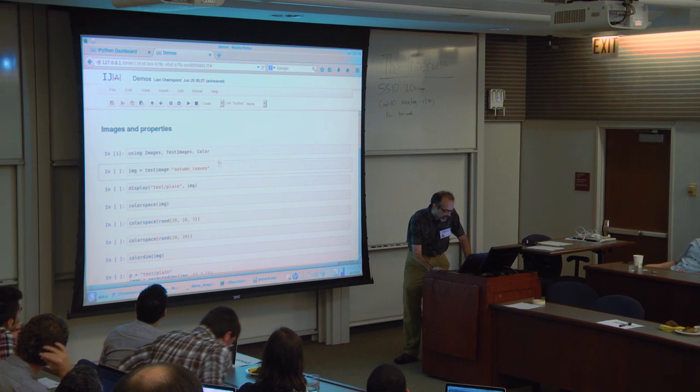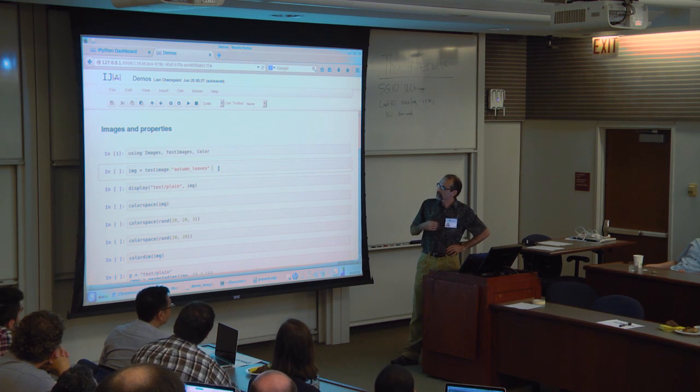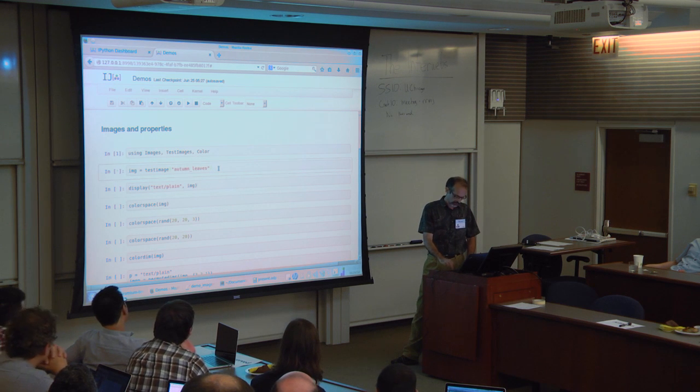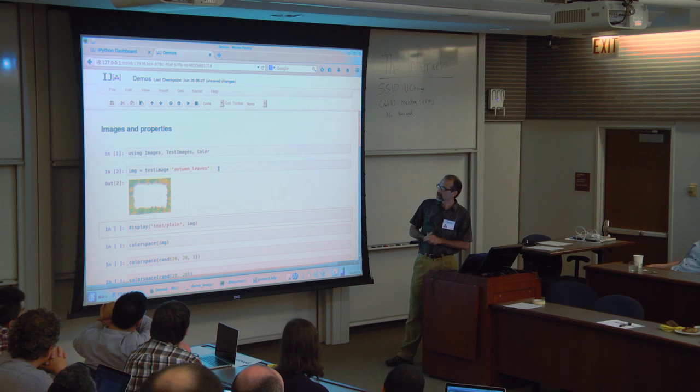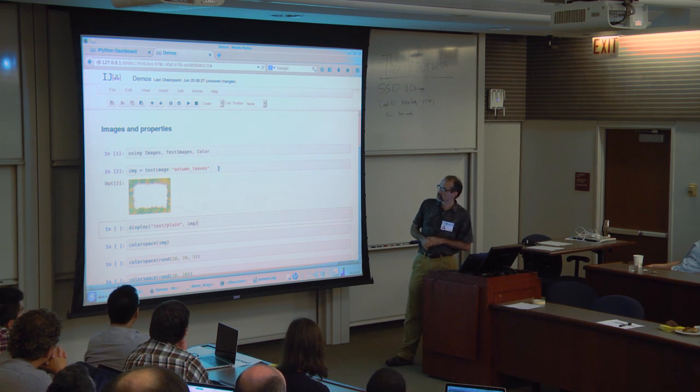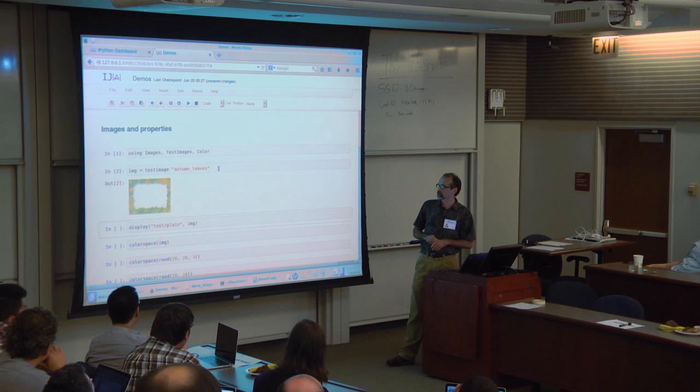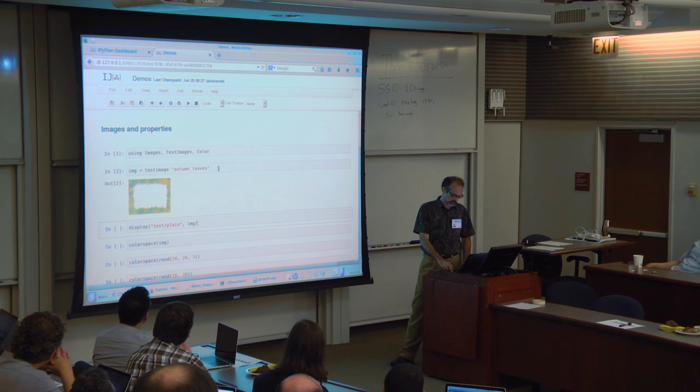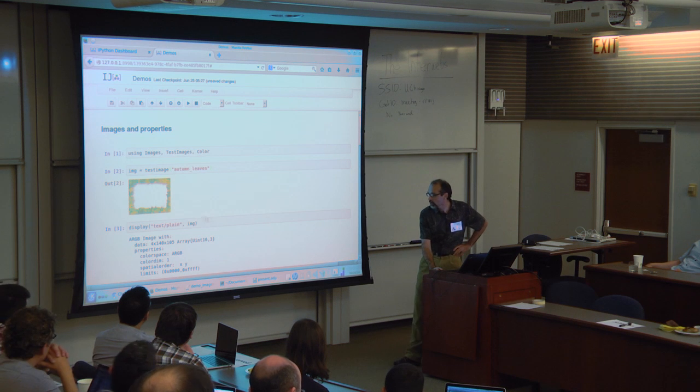So at great risk, I decided the best thing to do is actually show real-time demos. This is an iJulia session. I've preloaded a couple of the packages that we will need to work with here. I'm going to load up a simple test image here called autumn leaves. It pops in iJulia with the actual graphical representation of the image. And this is a very nice thing about working through iJulia, being able to see the raw image. For learning to use the images package, it's often actually a good idea to make sure that you're looking at the more raw representation of the image itself.